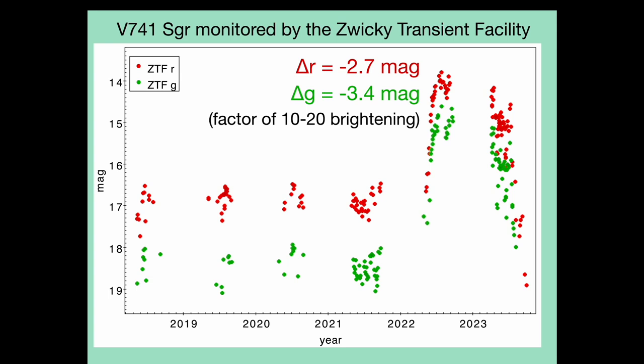Now let's take a look at the light curve of this source. Here are the G and R band light curves from the ZTF survey. We can see that this source was approximately constant between 2018 and 2021. It turns out that we can push this back farther with other surveys, to at least 2010, and there's no evidence of any previous outburst. However, in 2022, the star brightened by nearly 3.5 magnitudes in the G band and over 2.5 magnitudes in the R band.